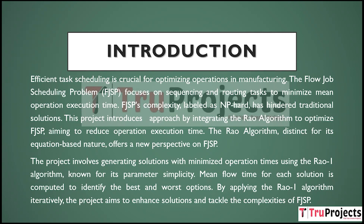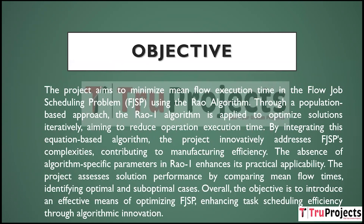The best and worst solutions are determined by calculating the mean flow time for each solution. The project improves solutions and addresses the complexity of FJSP by iteratively applying the RAW ONE algorithm. The project's goal is to use the RAW algorithm to reduce mean flow execution time in the Flow Job Scheduling Problem. Using this equation-based approach, the project solves FJSP's complexity in a novel way, contributing to production efficiency.